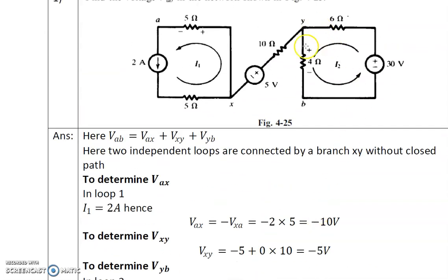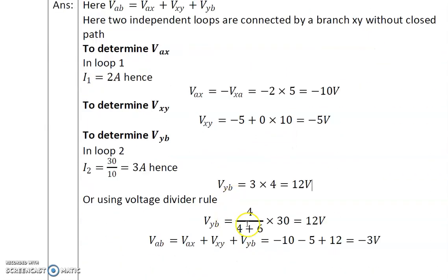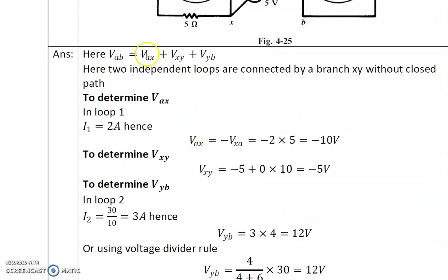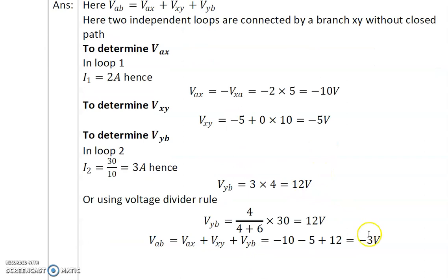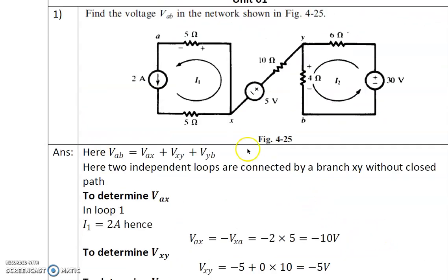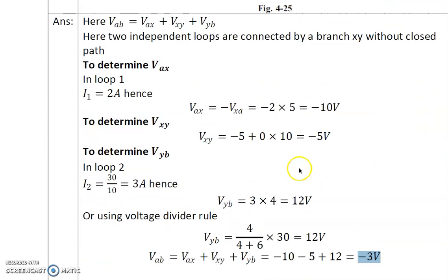By the voltage divider rule: 4 divided by (6 plus 4) into 30 = 12 volts, confirming VYB = 12 volts. Substituting: VAB = VAX + VXY + VYB = minus 10 minus 5 plus 12 = minus 3 volts. This indicates that point A is at negative potential with respect to point B. This completes the first problem.